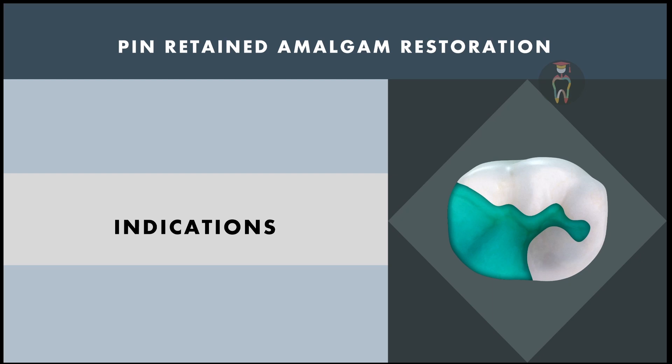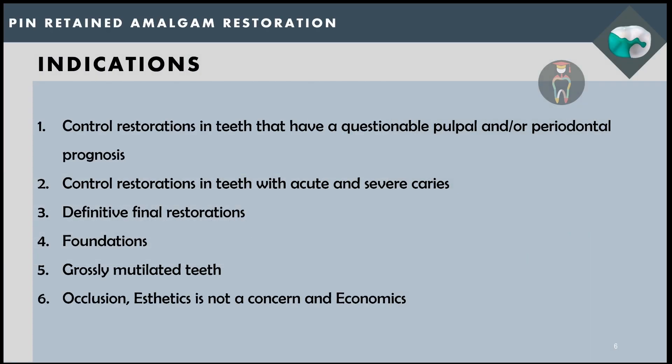The indications for pin retained amalgam restorations: first, it can be used as a controlled restoration in teeth with questionable pulpal or periodontal prognosis, and in teeth with acute and severe caries. Imagine a patient who has multiple severe caries — nowadays we use glass ionomer cement for this purpose, but in the past pin retained amalgam restoration was used.